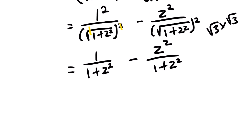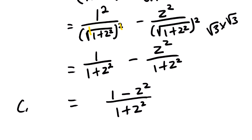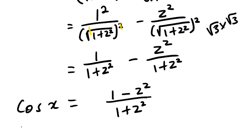Since we have a common denominator, we simplify the difference of the two fractions. This gives us the second identity of Z-substitution: cos X = (1 − Z²) / (1 + Z²).